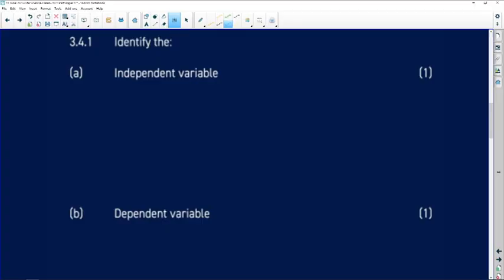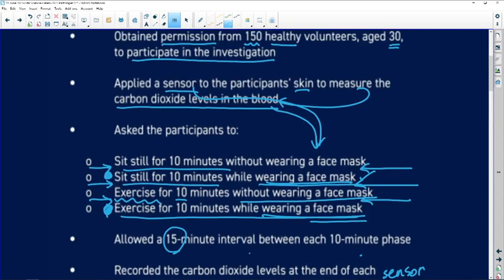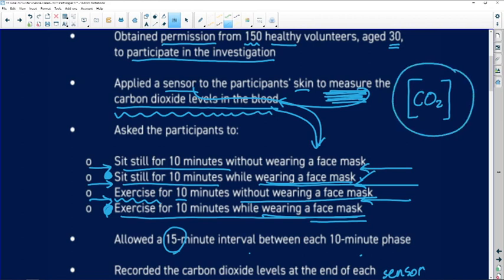That is all the information that you are given. You read through it, make sure that you understand what has been given to you. Now you have to identify your independent and dependent variables. What are the variables? Let's go back to the explanation here. We are measuring carbon dioxide levels, carbon dioxide concentration in the blood. There's our one variable.